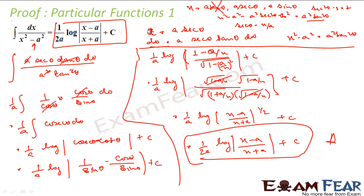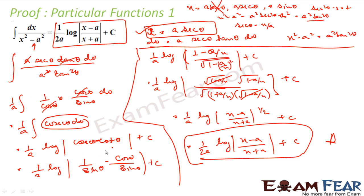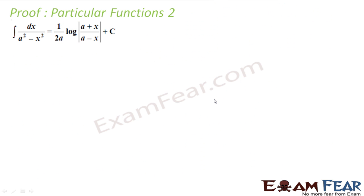Taking the 1/2 outside the log, this becomes (1/2a) log|(x - a)/(x + a)| + C, which is exactly the result we needed to prove. So to summarize: for the x² - a² form, put x = a·sec θ, find dx, substitute, simplify, integrate, then convert back to x using cos θ = a/x and sin θ = √(1 - a²/x²).